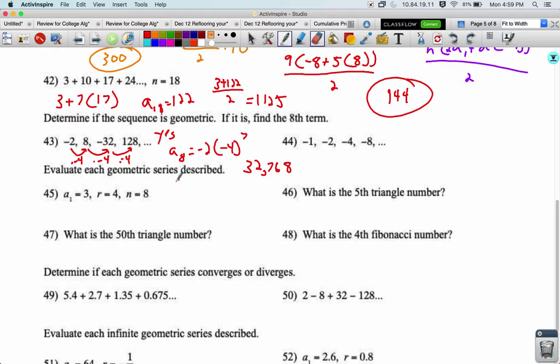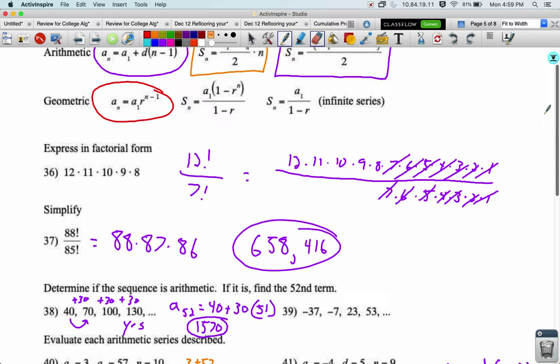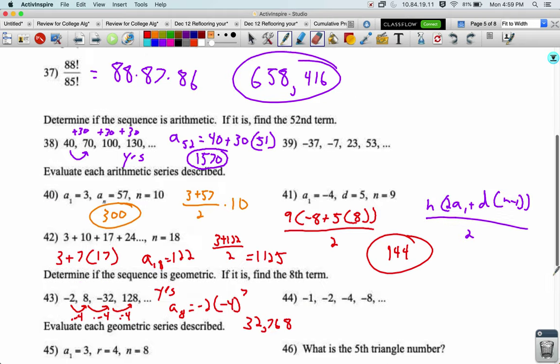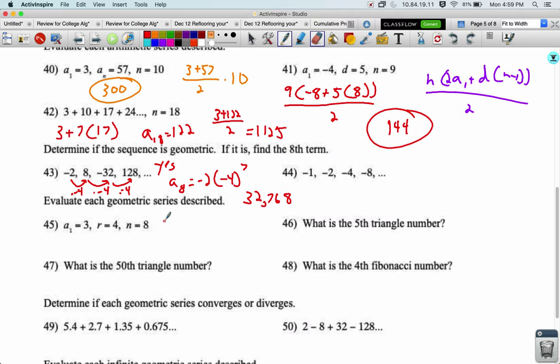To find the series, we've got to find the sum. We've got the first term, the common ratio, and the number of terms, so we can use this formula. It's a sub 1 times 1 minus r to the n, all over 1 minus r. This equals 3 times 1 minus 4 to the 8th, all over 1 minus 4.